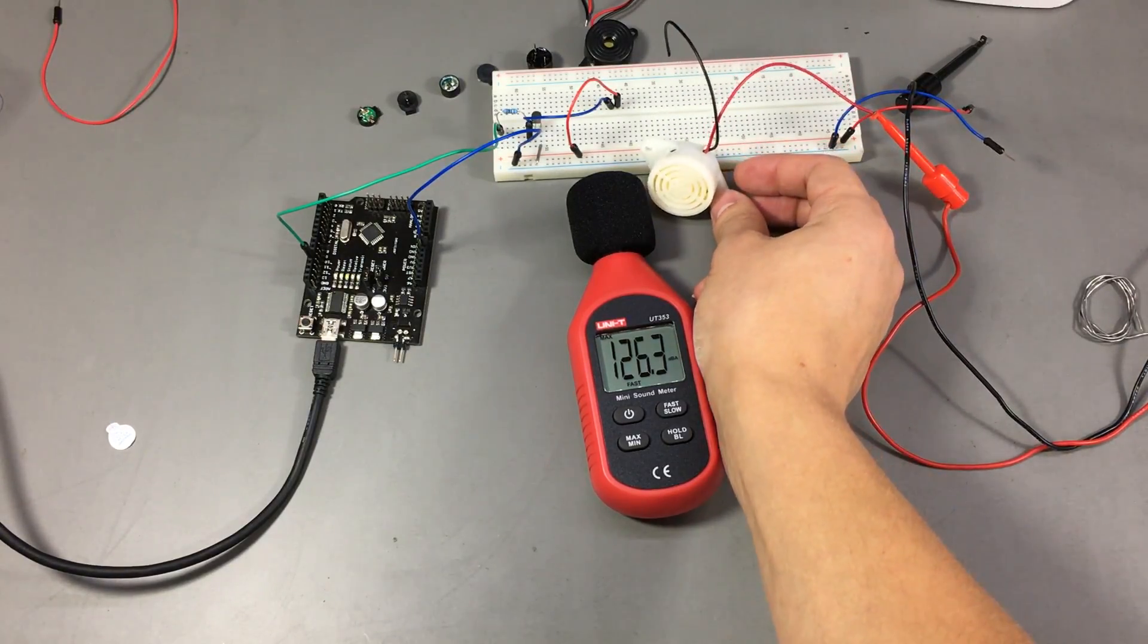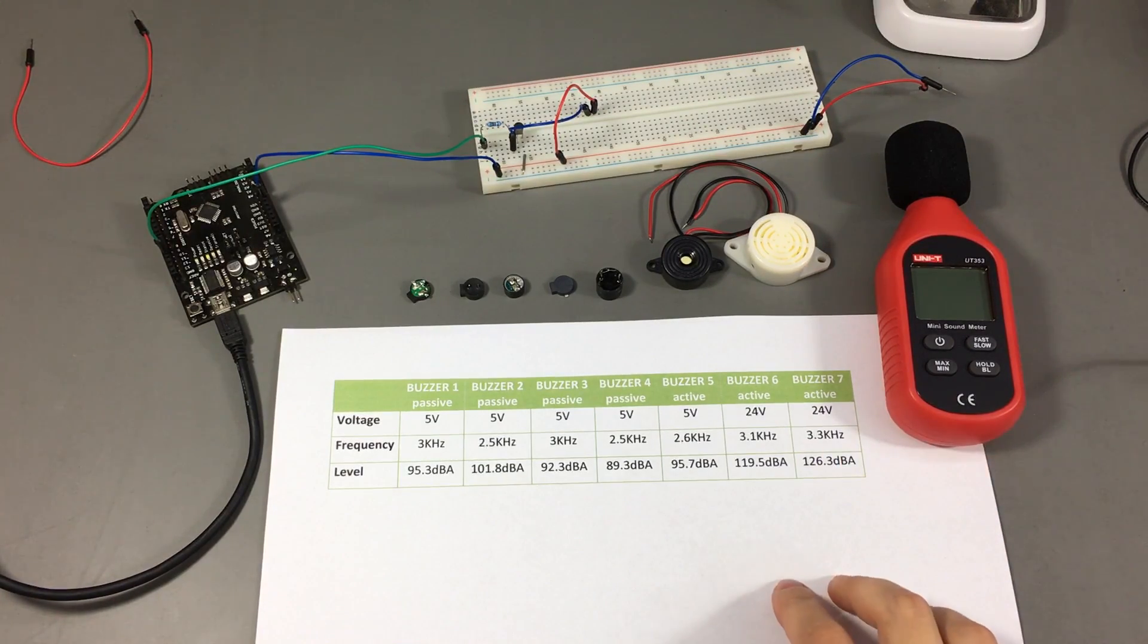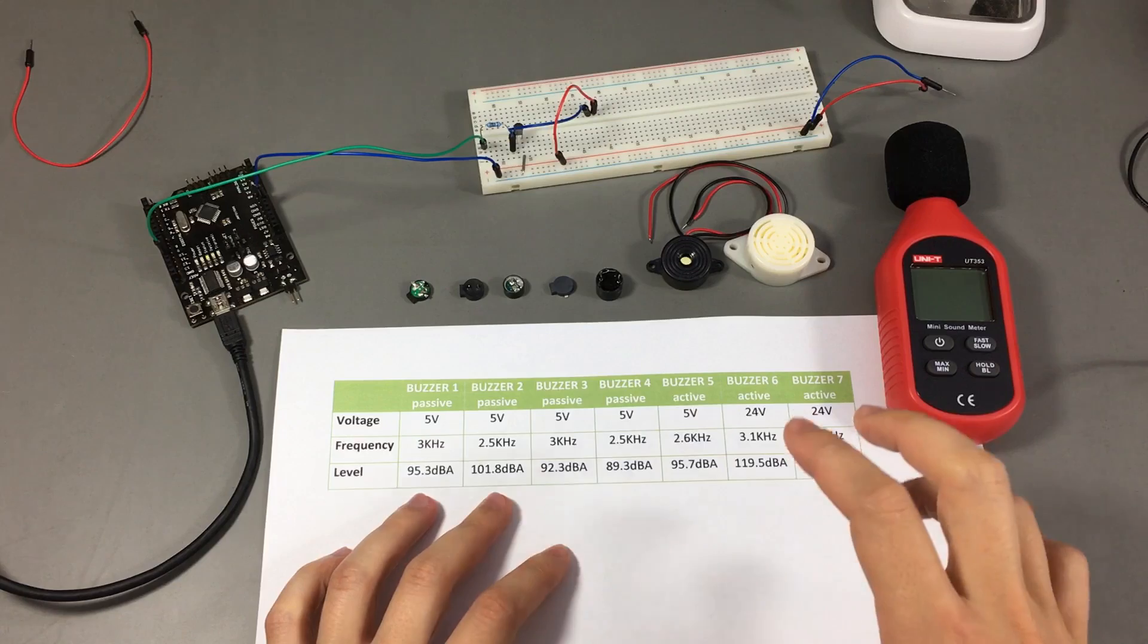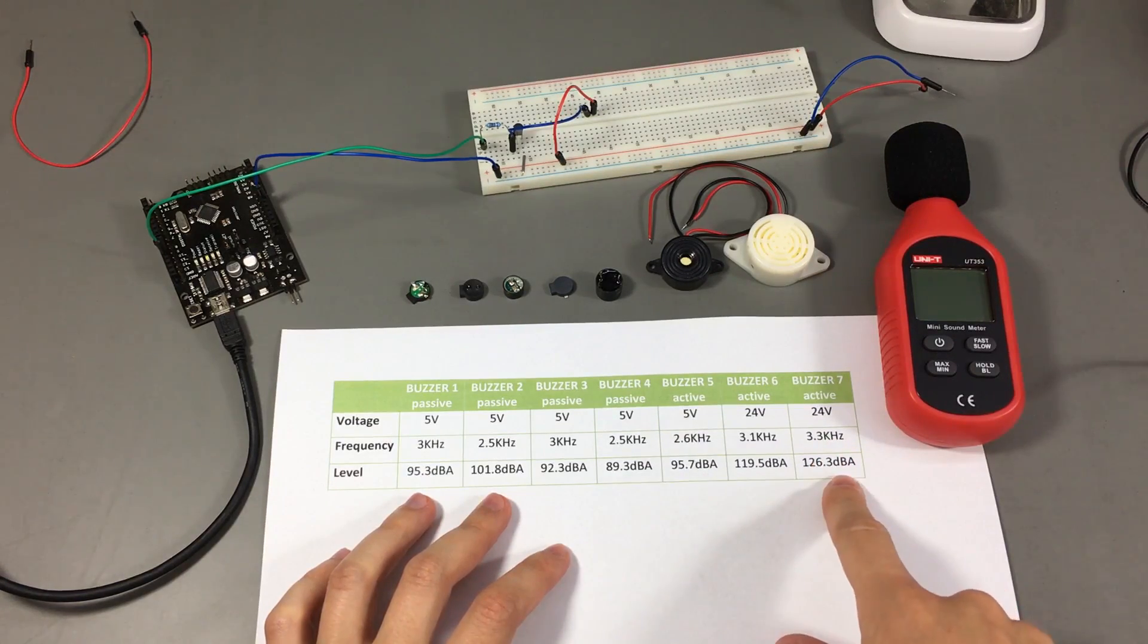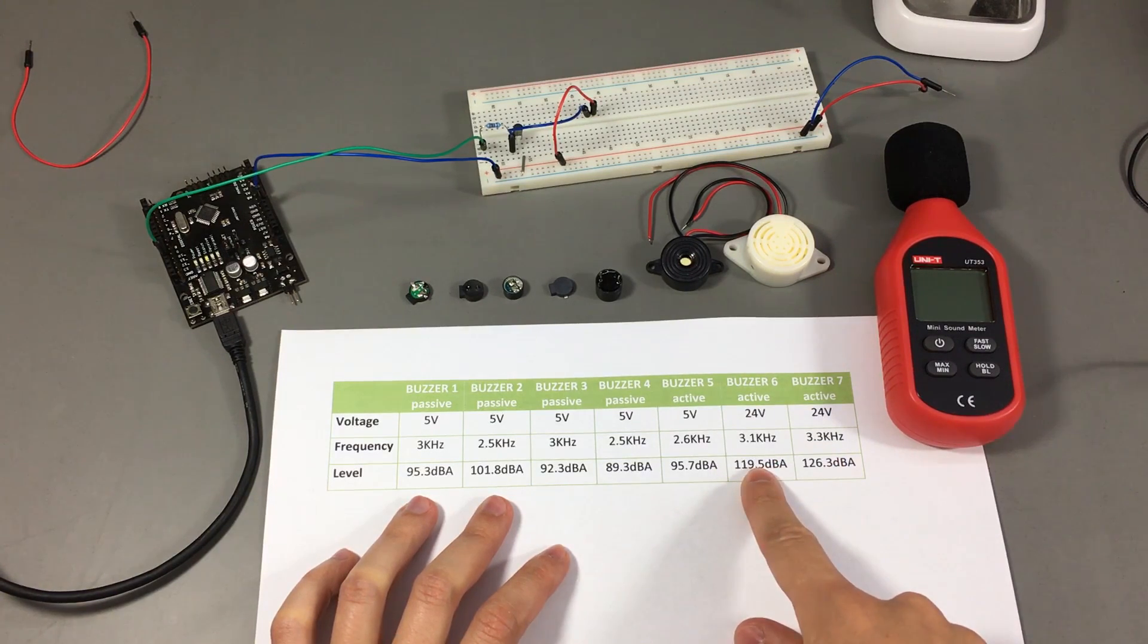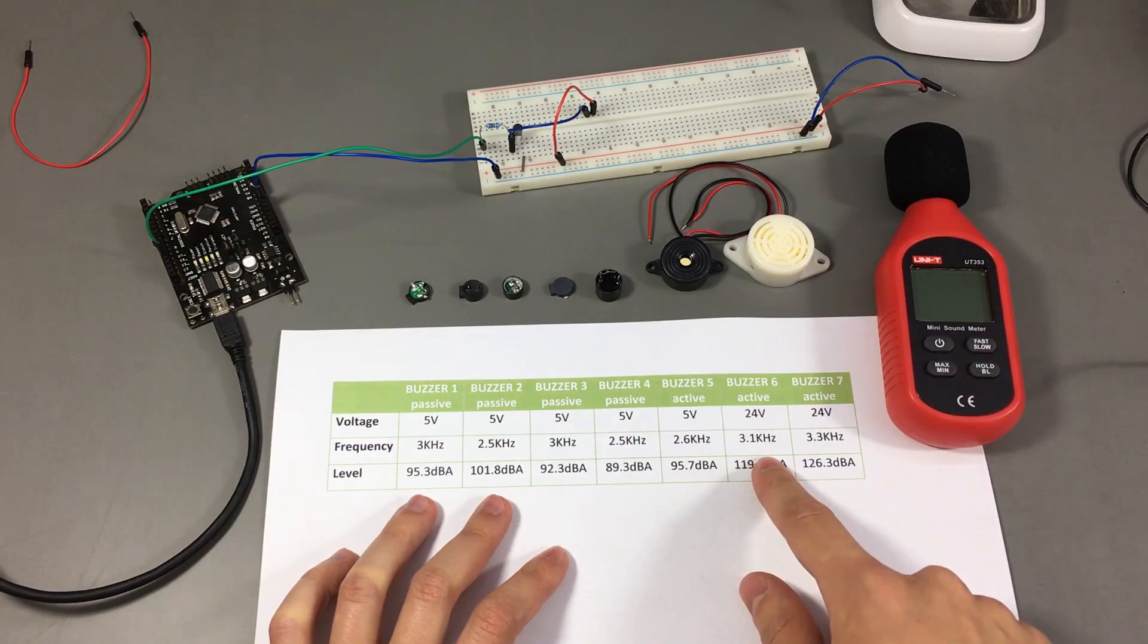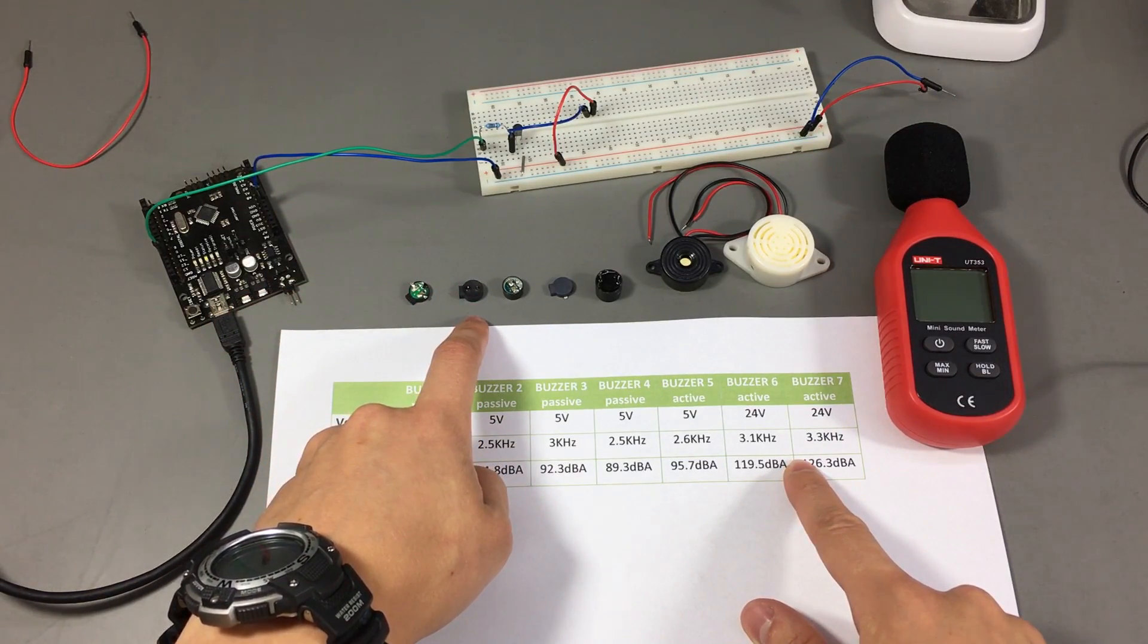So I collected all the data measurement from this experiment and organized it in this table. For the active buzzers, I had to do an FFT on the recorded sample to find out the frequency. I recorded the highest peak frequency, which is shown here in the table. As you can see, the clear winner is buzzer number seven. It's an active buzzer which puts out 126 dB at 3.3 kilohertz. Next goes buzzer number six with 119 dBA at 3.1 kilohertz. And we can start to see a pattern here, that the size of the buzzer as well as the voltage will mean a lot in terms of the output power. But we can also see that buzzer number two went over 100 dBA.